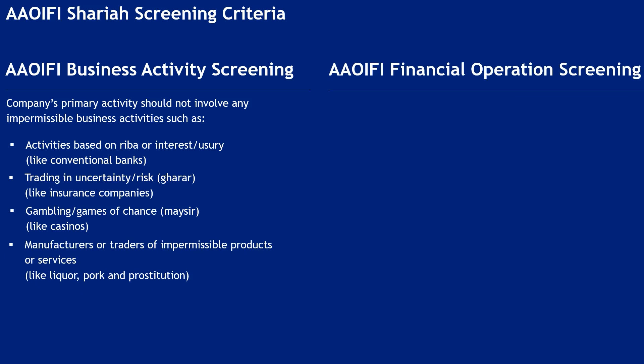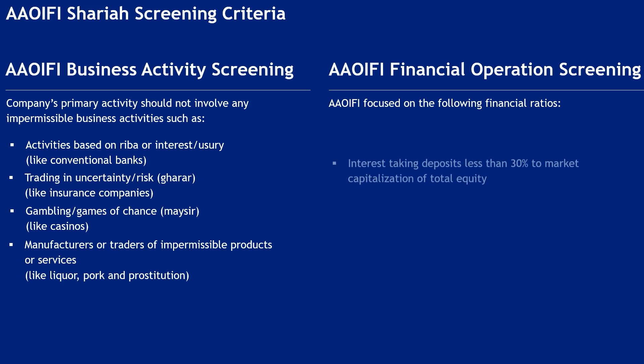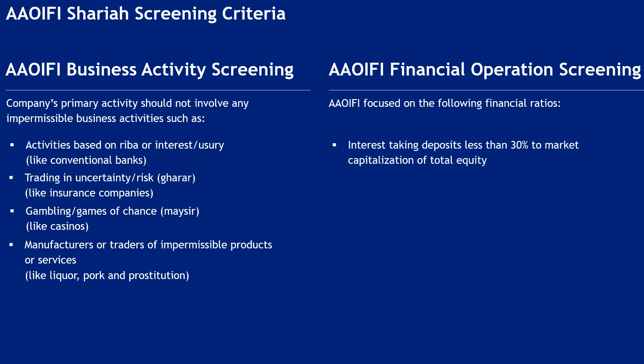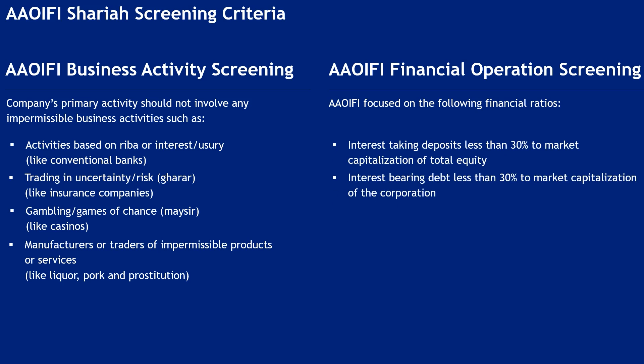AOIFI Financial Operations Screening. AOIFI focuses on the following financial ratios: interest-taking deposits less than 30% to market capitalization or total equity; interest-bearing debt less than 30% to market capitalization of the corporation; and total market value of illiquid assets more than 30% to market value of total assets.